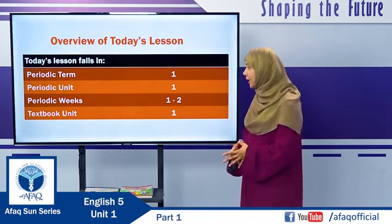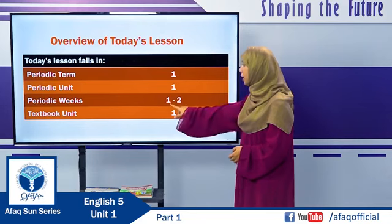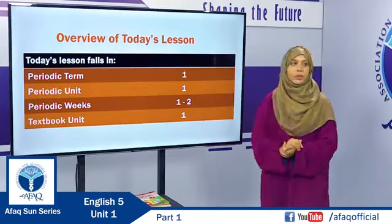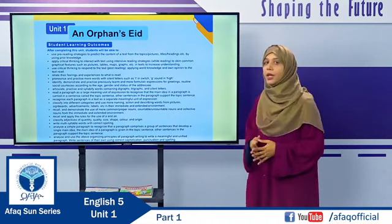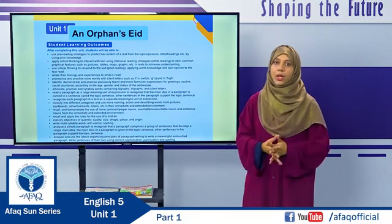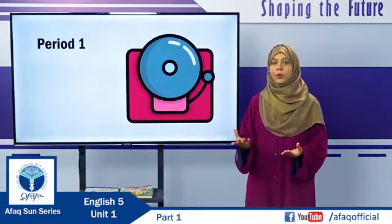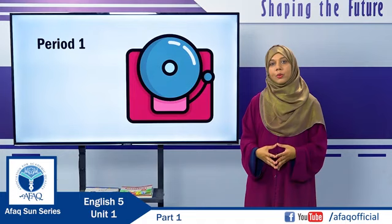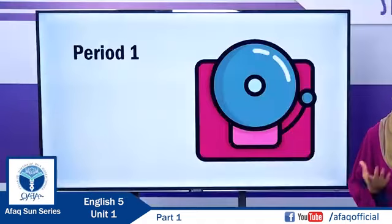Textbook Unit 1 will be covered in two weeks — Week 1 and Week 2 of Unit 1 of Term 1. The title of Unit 1 is An Orphan's Eid, and there will be sixteen SLOs in this unit altogether. In each periodic week, there are seven periods allocated for English. Now let's start with the first period of Unit 1.